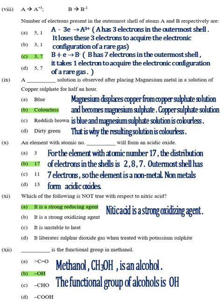Part 10, Answer B, 17. For the element with atomic number 17, the distribution of electrons in the shells is 2, 8, 7. Outermost shell has 7 electrons, so the element is a non-metal. Non-metals form acidic oxides.